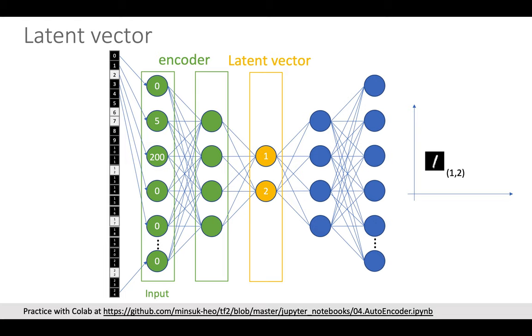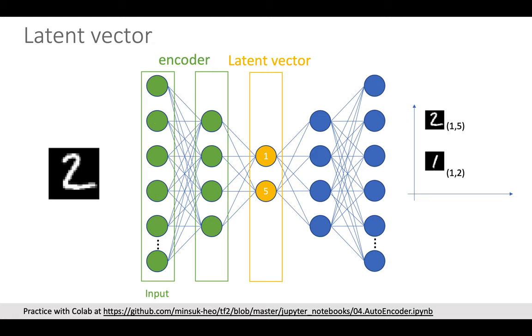For example, if the latent vector was like 1, 2, we can plot like right hand side plot here. We also can plot other images like this, and like this, and like this. If you trained autoencoder well, you will see same numbers will cluster together, and I will show you the real cluster at the end of this video, which is from our TensorFlow 2 code.